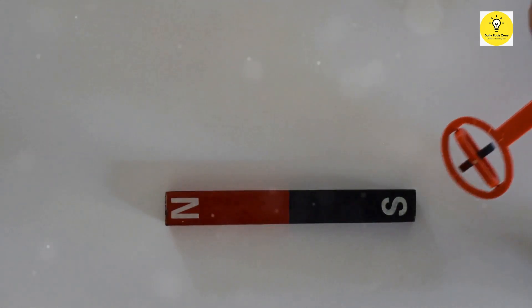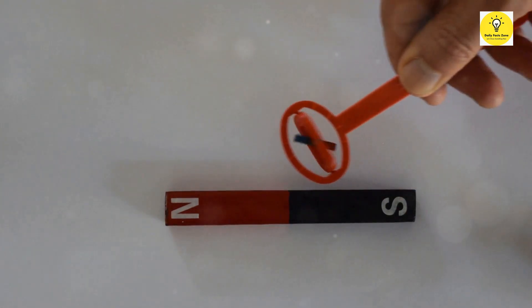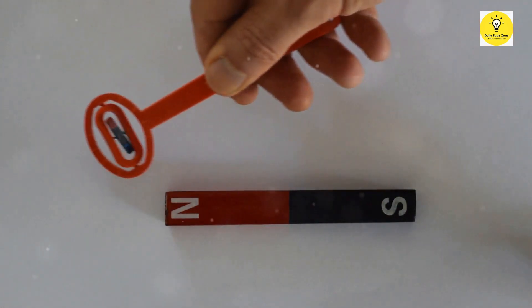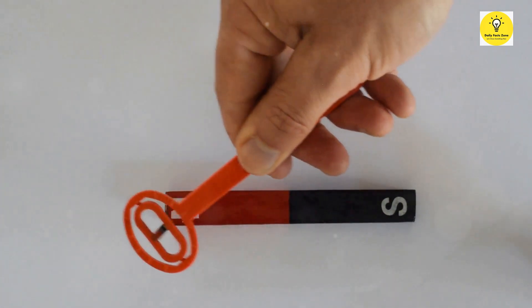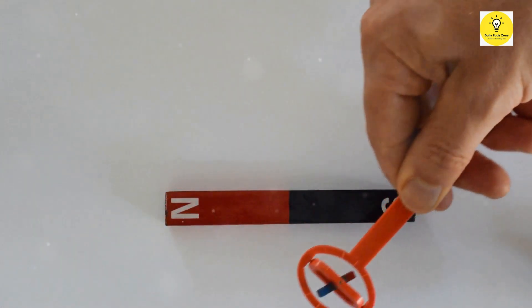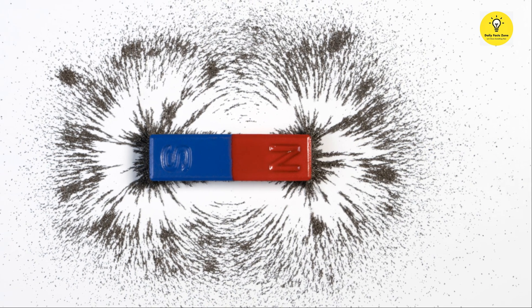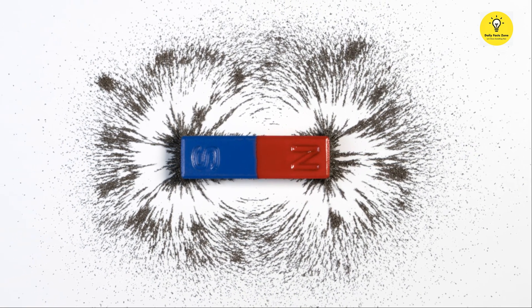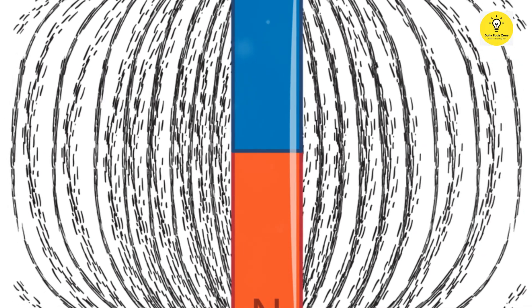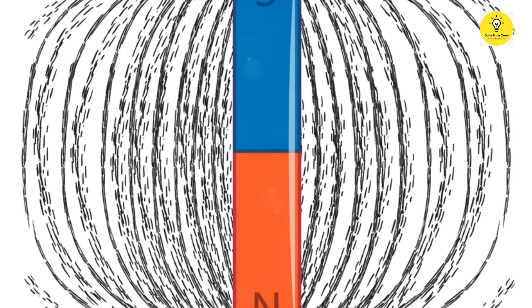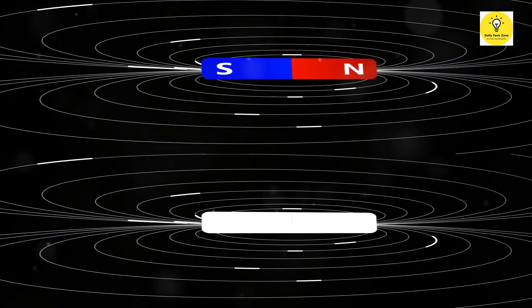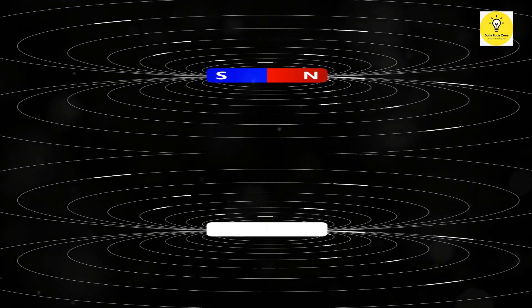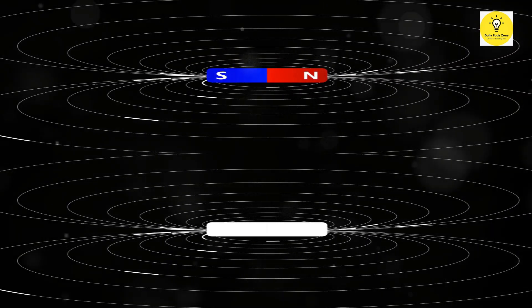One of the fundamental principles of magnetism is that opposite poles attract and like poles repel. This is a basic yet crucial concept in understanding how magnets work. When two magnets are brought close together, their magnetic fields interact. If the north pole of one magnet faces the south pole of the other, they will attract each other. This attraction is due to the alignment of their magnetic fields.